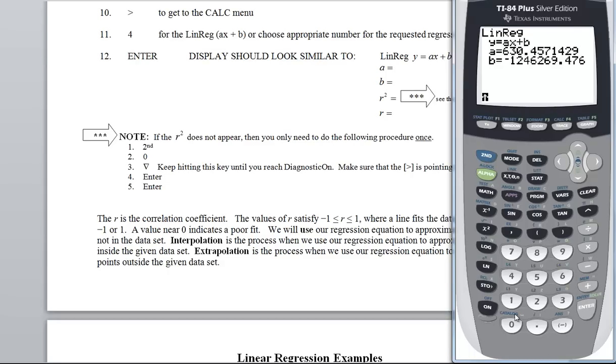So it sort of looks like this, but I do not have these. So here I go. If it does not appear, then you need to do the following procedure once. Do second, zero for catalog. You can get to where you need to go in one of two ways. Since this is in alpha mode, if you'll go hit this key right here where D is because I need diagnostic on, you'll get there a little bit quicker. Or you can just cursor forever and eventually you'll get there. So this thing needs to be right at diagnostic on. Hit ENTER and hit ENTER one more time. Now let's see if I can go back and get that. I want to go over to CALC, number four for linear, and let's see if I've got my R squared and R. So there they are. And notice my R, 0.99, very, very close to one. So a pretty good fit.